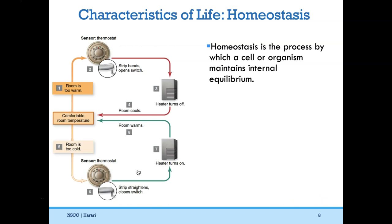An example of homeostasis can be found in a thermostat. A thermostat keeps a room at a certain temperature — humans like to be around 70 degrees Fahrenheit. If it's a very hot day and the room warms up, the thermostat senses that change, realizes it's not at 70 degrees, and tells the heater to shut off. The heater not being on will cool down the room until we're at that comfortable temperature again.